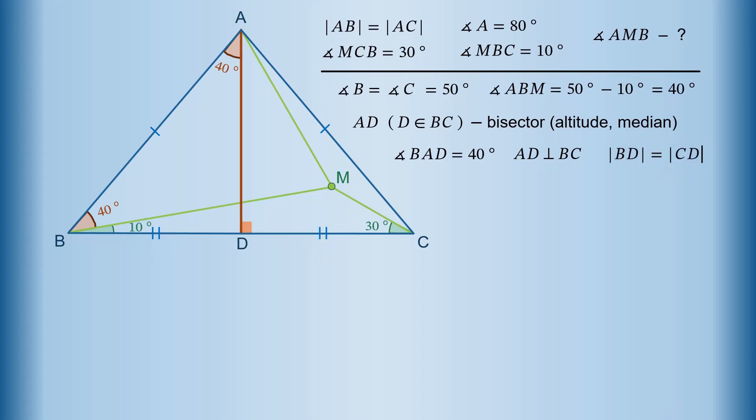Next comes probably the least obvious additional construction. We extend segment CM through point M until it meets AD at point E. So segment ME is the continuation of segment CM and point E belongs to segment AD.